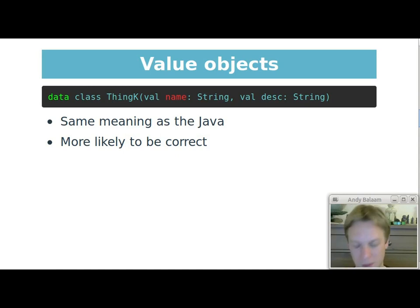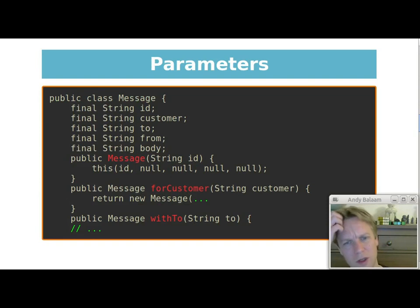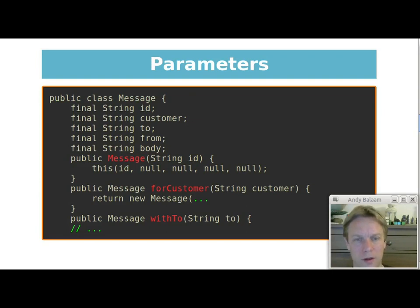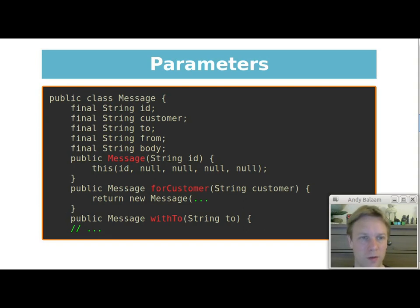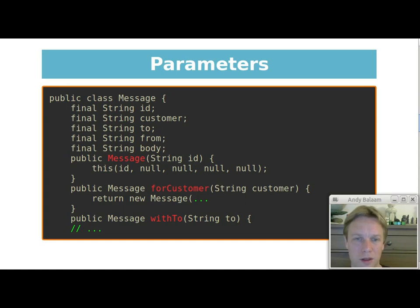Let's take another example. This is a class called 'Message' — taken from some real code, then massaged enormously. It has a number of properties: ID, customer, to, from, body — like a message being sent from one person to another. Most of those properties are optional except for ID, which is mandatory. You can see there's a constructor which takes in the ID — that's the only constructor — and if you want to make a message with a customer set on it, you call the constructor with an ID, then call `.withCustomer()`, which returns a new message that is a modified version of what you had before.